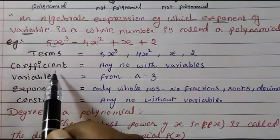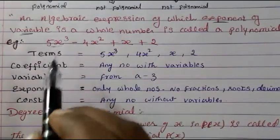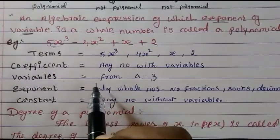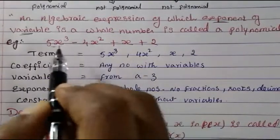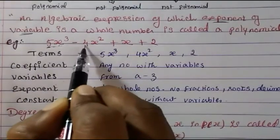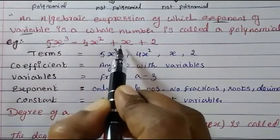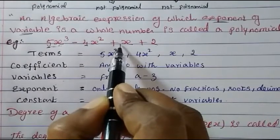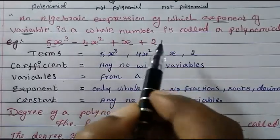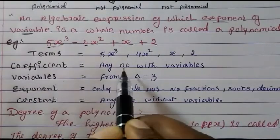Next is coefficient. Coefficient means any number with a variable. So in 5x³, the number 5 is a coefficient. In 4x², the number 4 is a coefficient. In x, the number 1 is the coefficient. But the 2 at the end is not a coefficient because there is no variable with it.